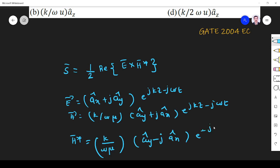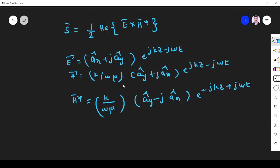E power minus jkz plus j omega t. Now what I have to do? I have to find E cross H star first, E cross H star.